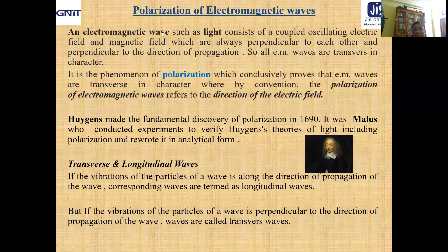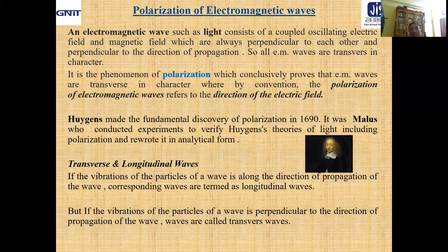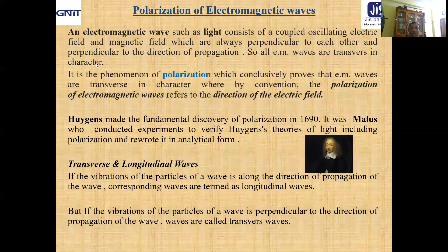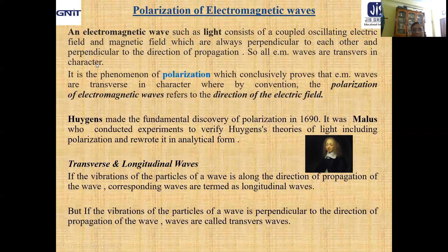Now, any electromagnetic wave, already we have seen, consisting of light, X-ray, visible light, ultraviolet light, gamma ray, cosmic ray, everything consists of a couple of oscillating electric and magnetic fields, which are always perpendicular to each other and perpendicular to the direction of propagation. So all electromagnetic waves are transverse in character.